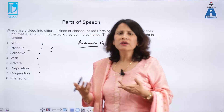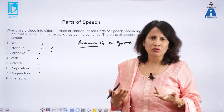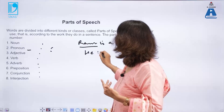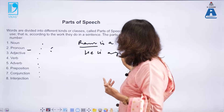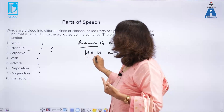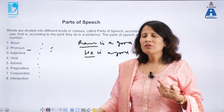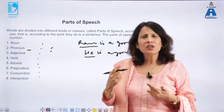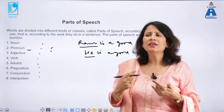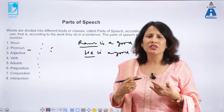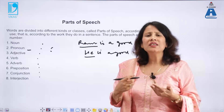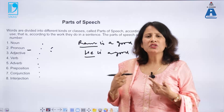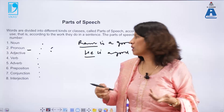A pronoun is a word used in place of a noun. If I replace 'Ram' with 'he' — 'He is a good boy' — then 'he' becomes a pronoun. We can also say 'She is a good girl' instead of 'Gita is a good girl.' Words like he, she, it, they, and them are all pronouns.